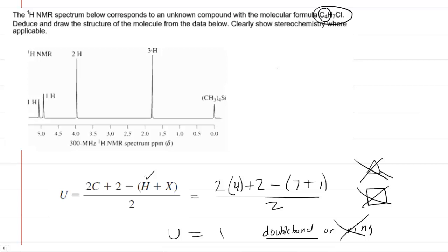The next thing to note is some of the information from the proton NMR. We can see that a signal corresponding to 3 hydrogens represents a methyl group. A signal with 2 hydrogens would be a CH2 group, and then we have 2 individual CH groups. It's quite likely that those are the hydrogens connected to the double bond, but we'll need further analysis.